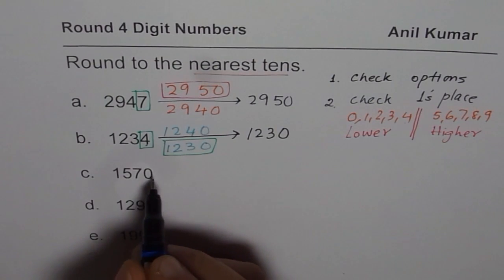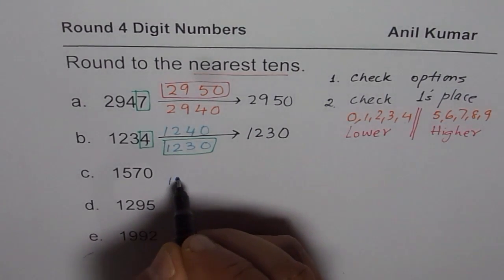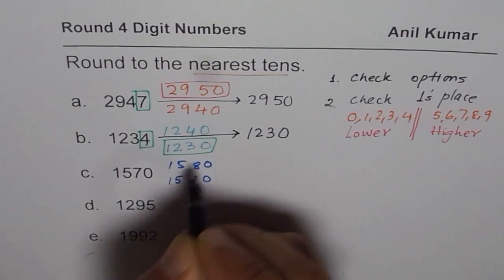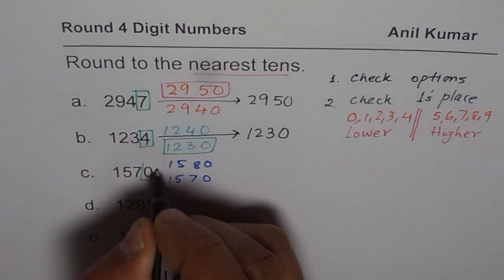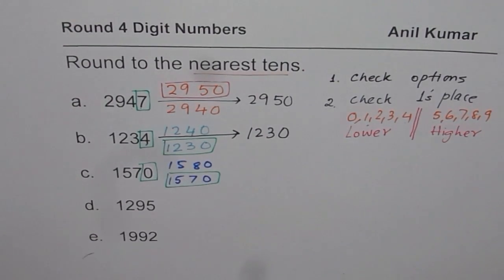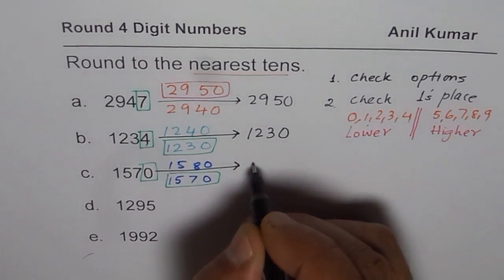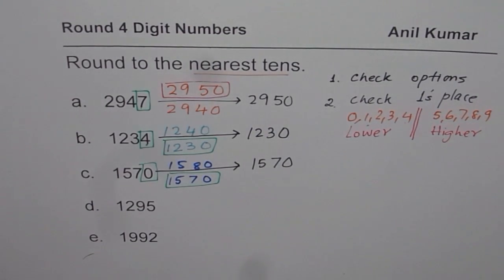Next number. 1,570. 1,570 is between 1,570 and 1,580. So what is the number in 1's place? It is 0. 0 is lower. So we will select the lower option. So it rounds to itself the same number. 1,570. It is already rounded to tens. That is the answer.